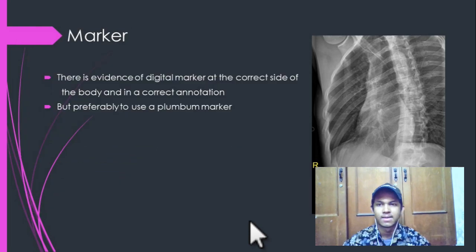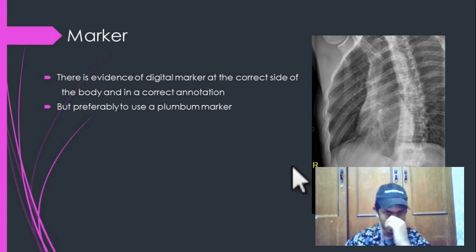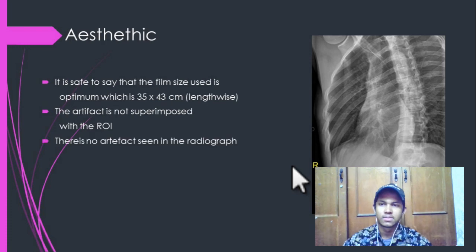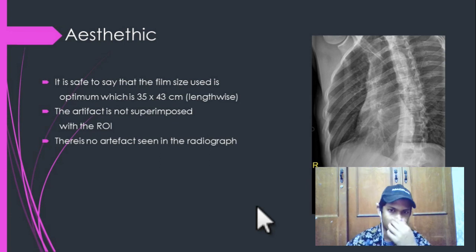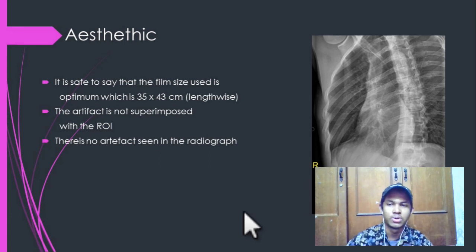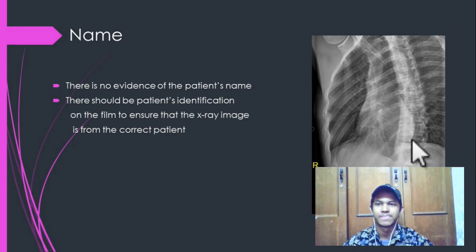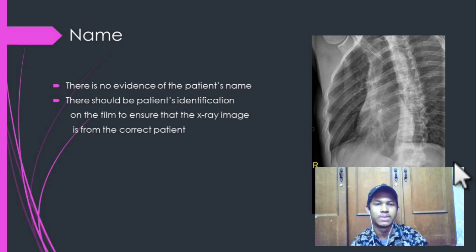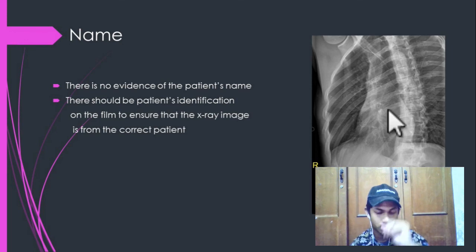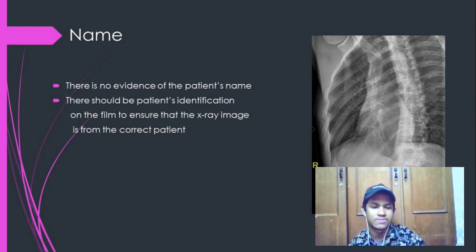For the marker, there is evidence of a digital marker at the correct side of the body and in the correct annotation. For the aesthetic value, the film size used is optimum, which is 35x43 cm. There is no artifact superimposed with the region of interest — the image is clear. As for the patient identification, there is no evidence of patient identification on the film, although the presenter's video is overlapping with the image. There should be identification on the film to ensure that the film is from the correct patient.